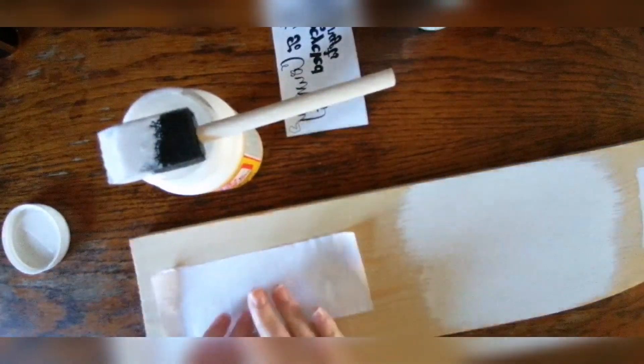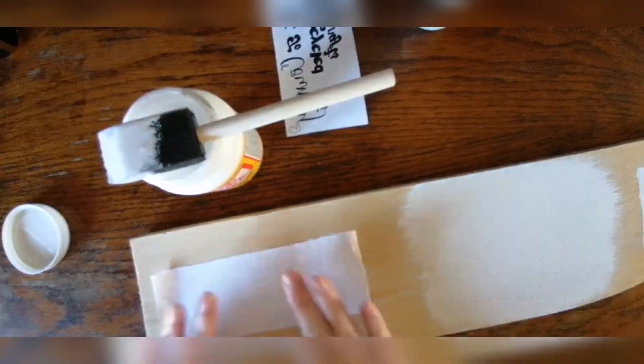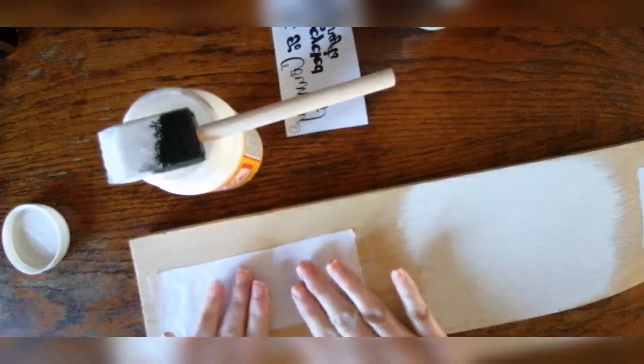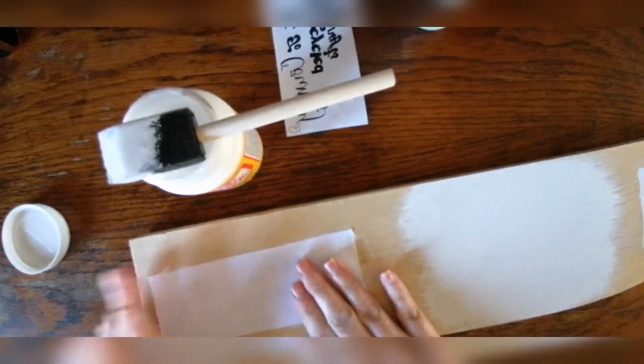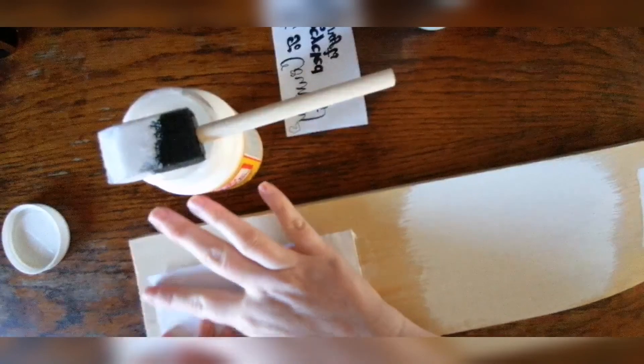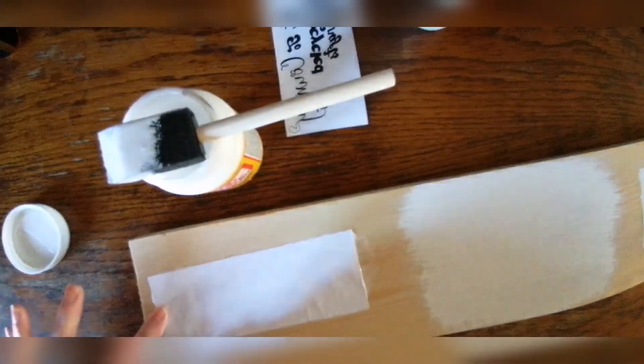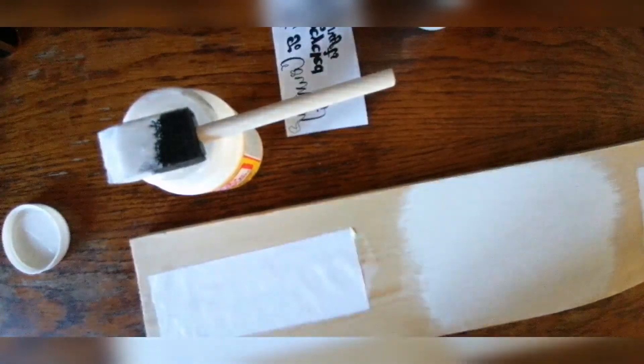And again here you are going to want to make sure that you have completely covered your graphic image and you have put a really nice thick layer of glue over the top of the graphics and that is to ensure that you have covered your graphics fully to ensure that it sticks to the piece of wood and you get a full coverage once the graphic has transferred to the wood.